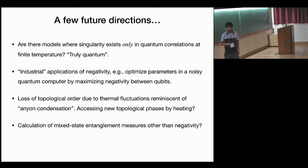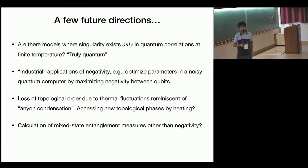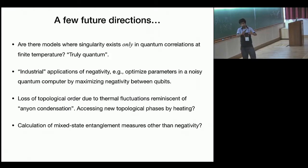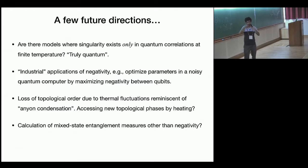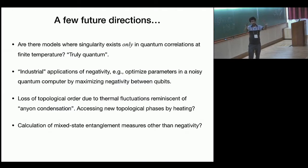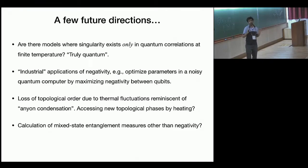Q&A: For the 4D Toric code, near the transition we don't know the critical behavior analytically—we know the low-temperature expansion gives log 2, and above the transition minimum T_A T_B is zero. Based on convergence of perturbation theory we expect it survives, but we don't know the critical exponents. We have some intuition from strings becoming larger about what the exponents should be, and it can be done numerically without a sign problem.